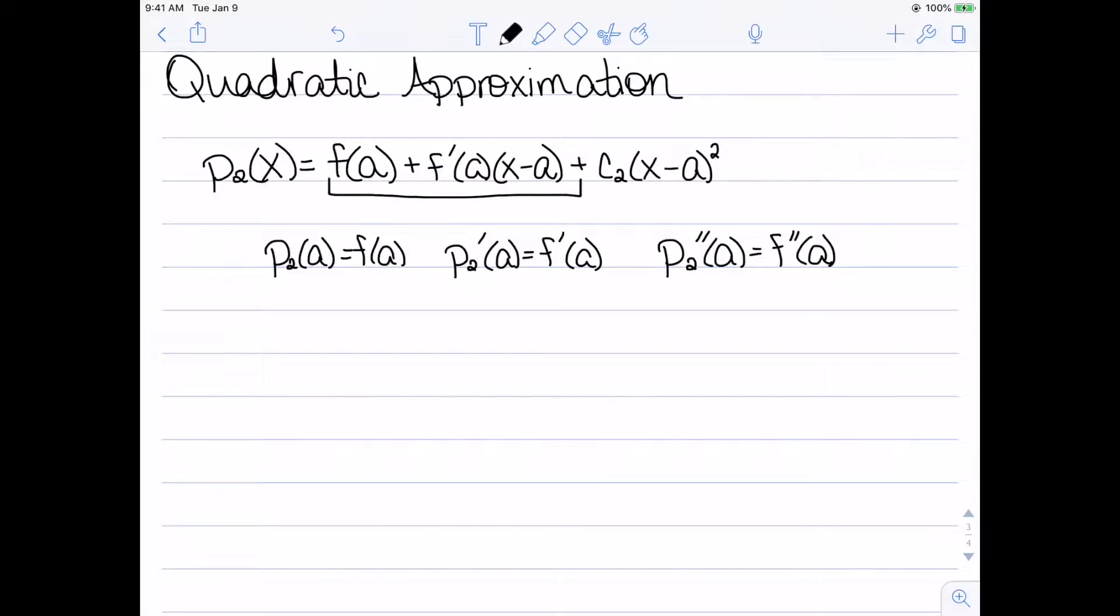And we can absolutely do this. You can see if I find p_2(a) that my quadratic term and the (x minus a) term are going to cancel. I'm just left with f(a). So that's done. If we take the derivative of p_2 and then stick in a, we will get that p_2'(a) is equal to f'(a). And then if we take the second derivative of this polynomial and stick in a, we'll actually get 2 times c_2.